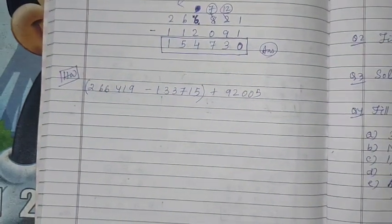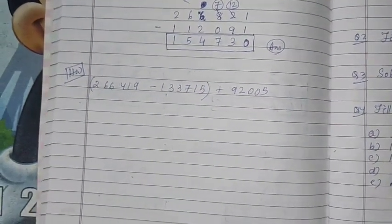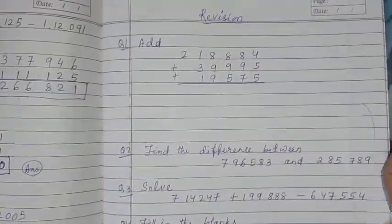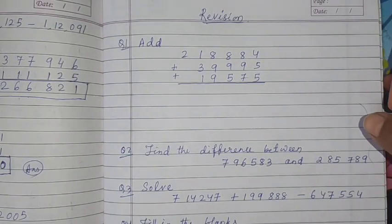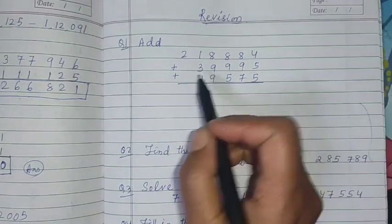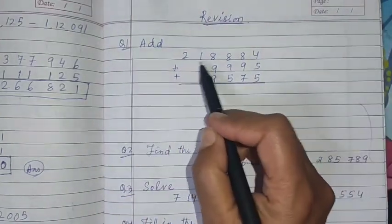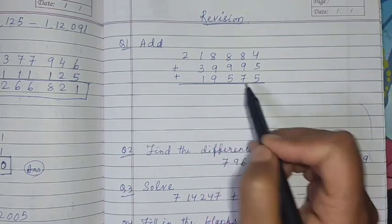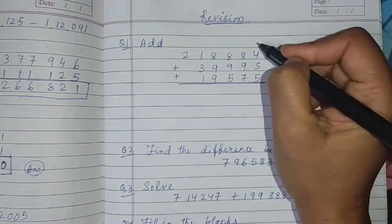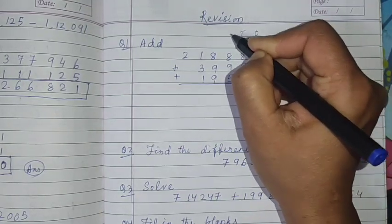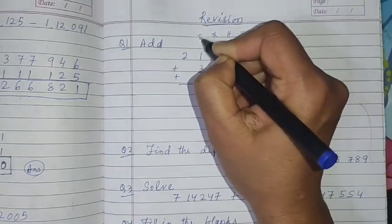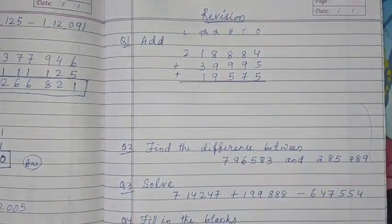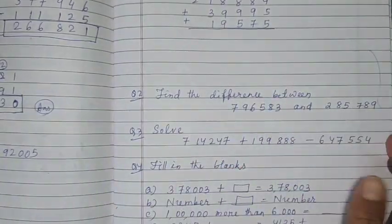Now see the next sum. Question I have set for you for revision. These questions are not from your book that I have written. Try to do this addition - simple addition is there. 2,18,884 plus 39,995 plus 19,575. Now find the difference between this and this two.